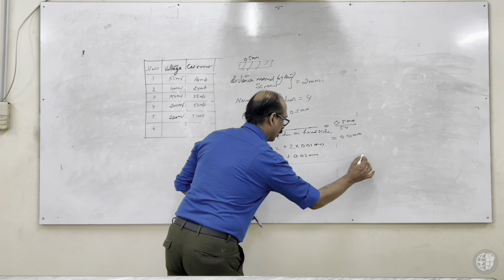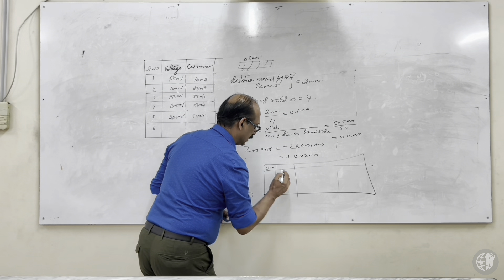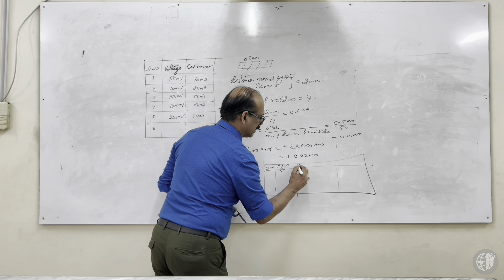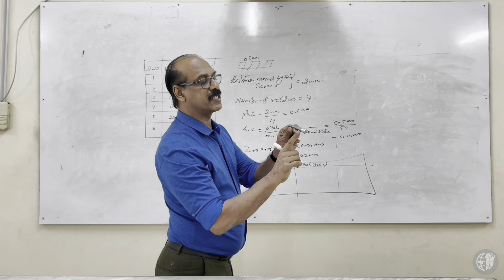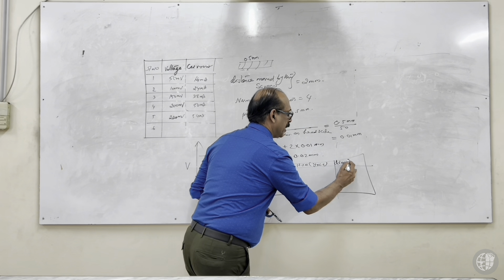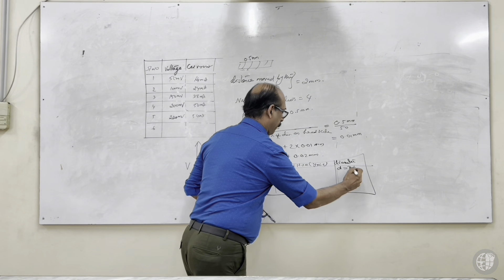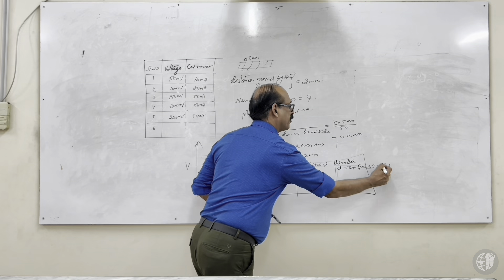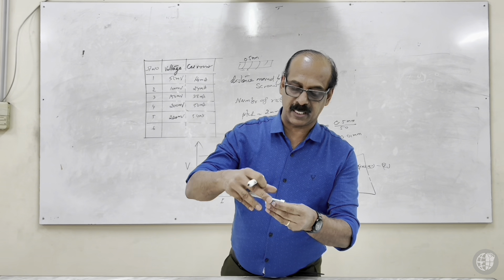The tabular column has: serial number, pitch scale reading X, head scale reading Y multiplied by least count, and diameter D equals X plus Y times least count minus zero error. Now placing the specimen between the jaws and tightening, we take the reading.